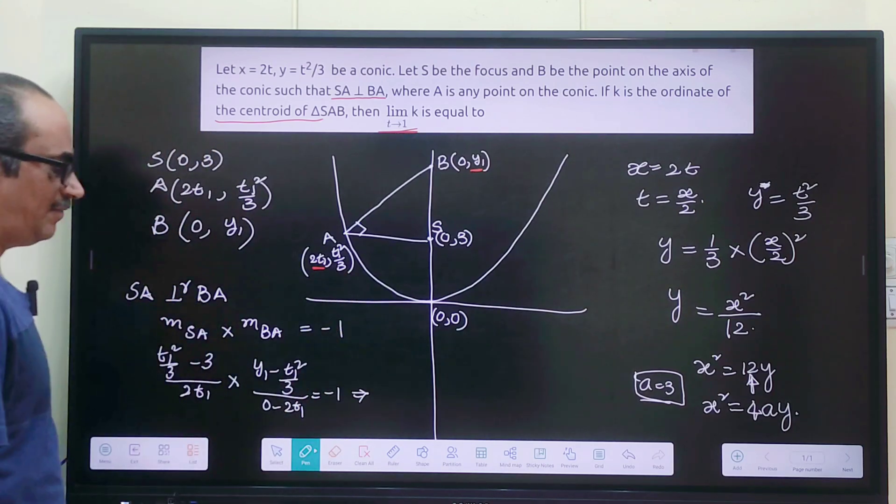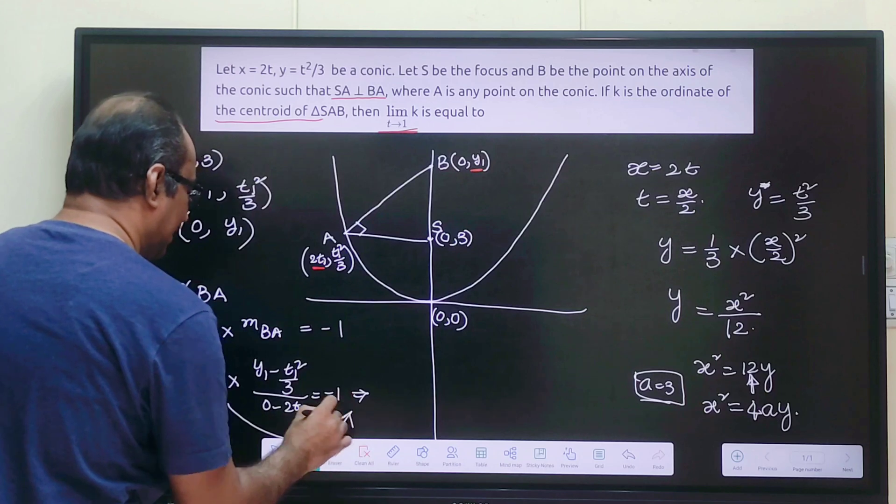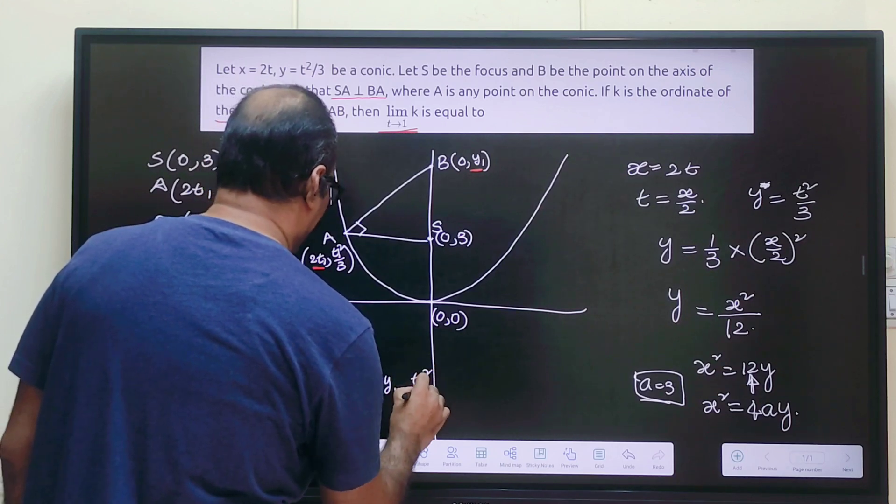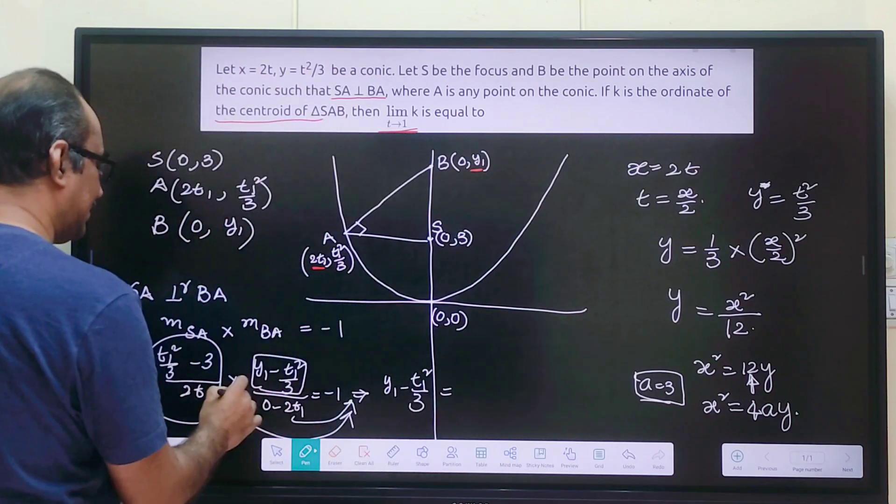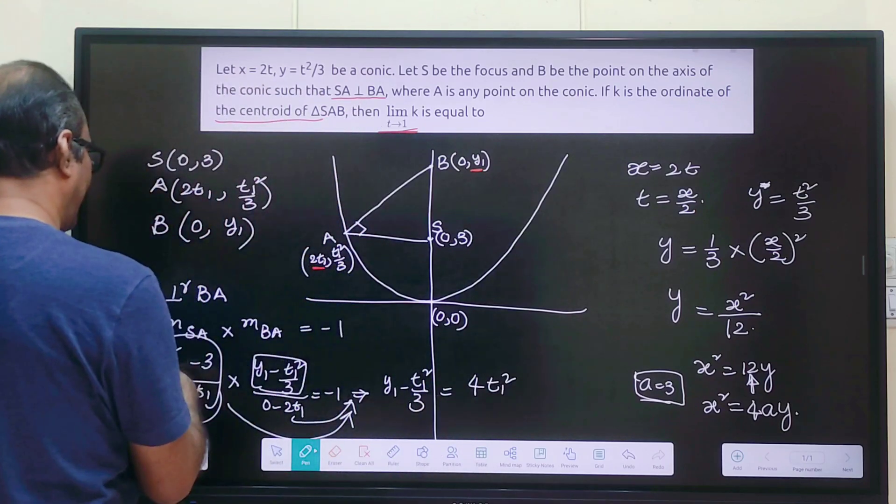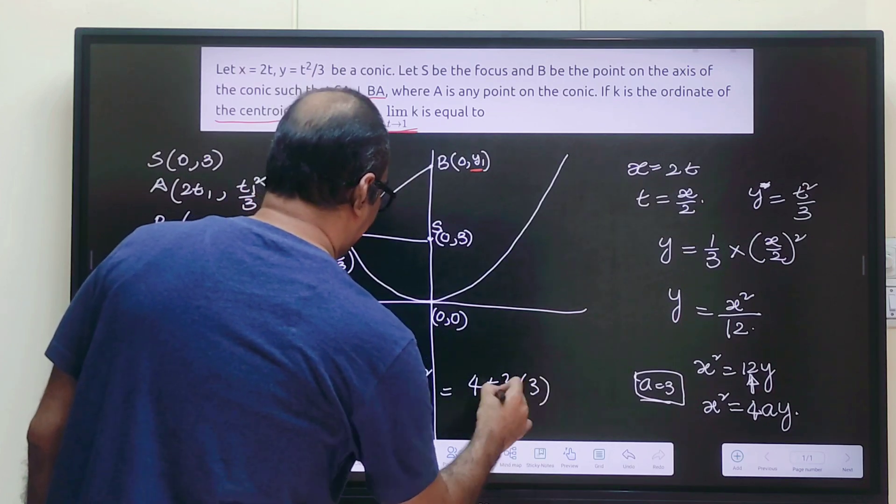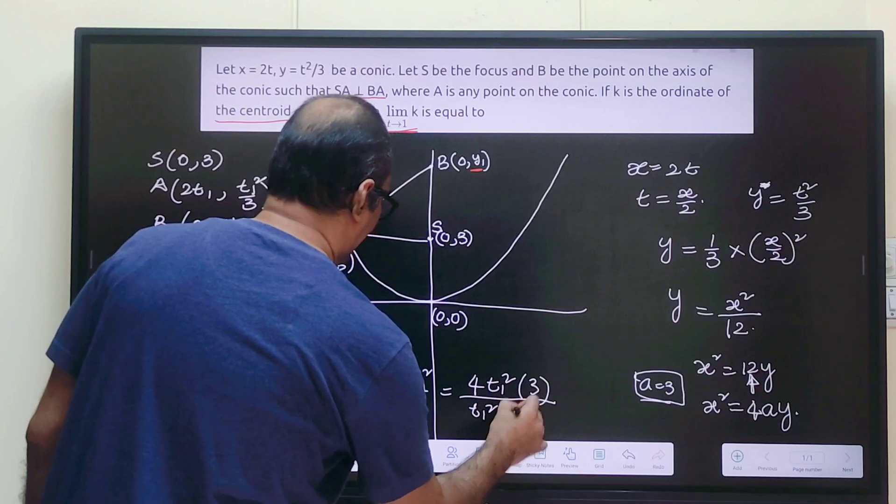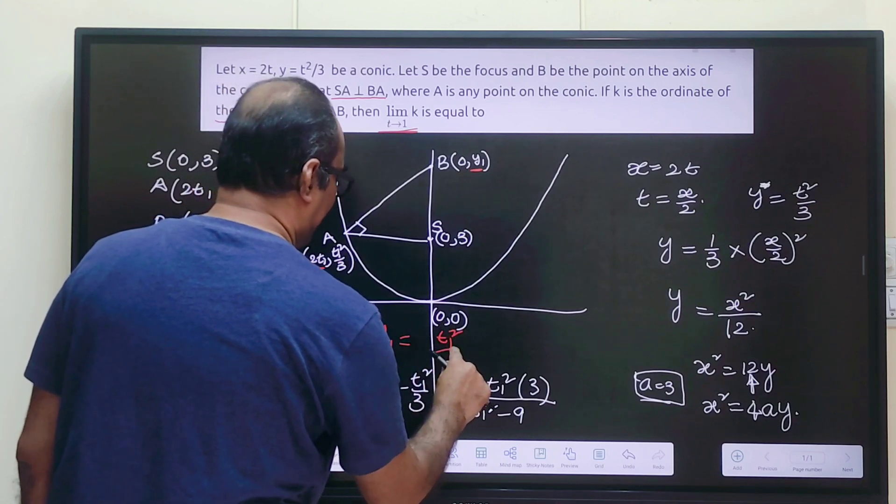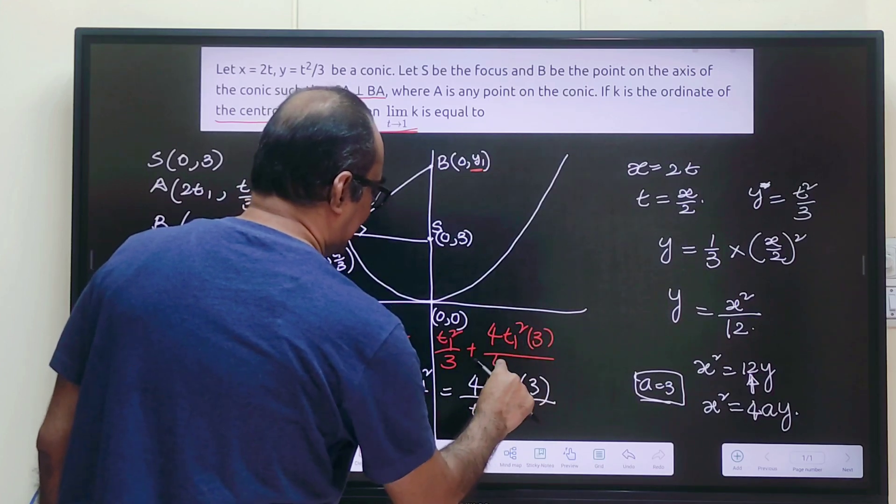From this can we find out the value of y₁ in terms of t₁? So we will simplify this. That will be y₁ - t₁²/3 = (4t₁²·3)/(t₁² - 9). Now what will be y₁ then? y₁ will be t₁²/3 + (4t₁²·3)/(t₁² - 9).